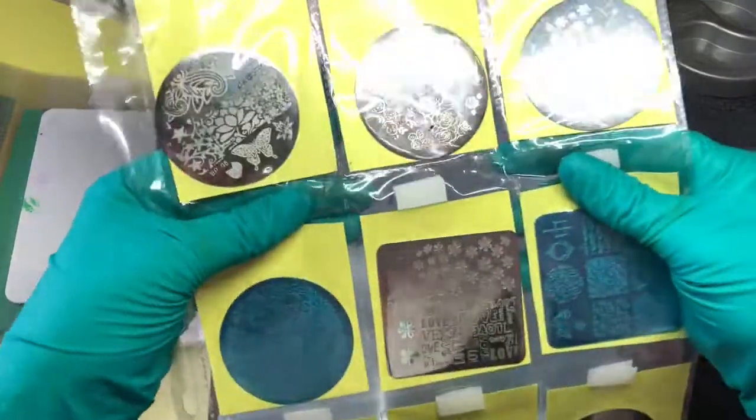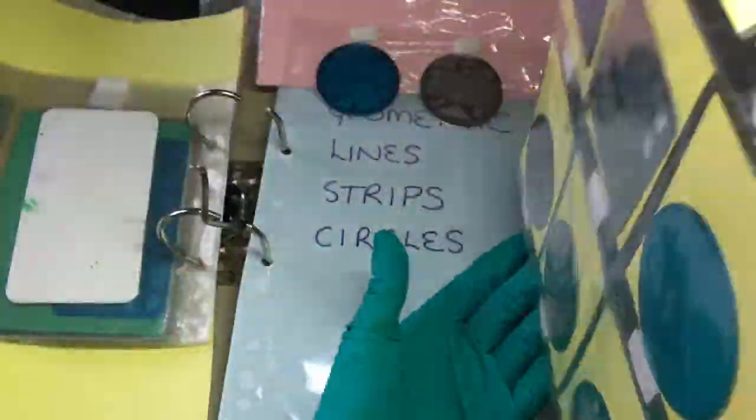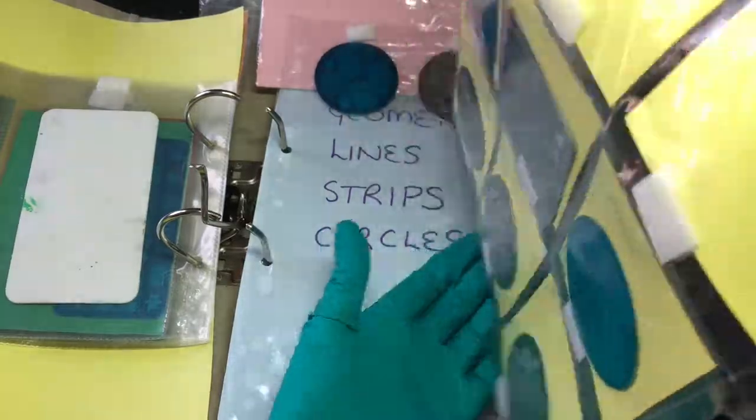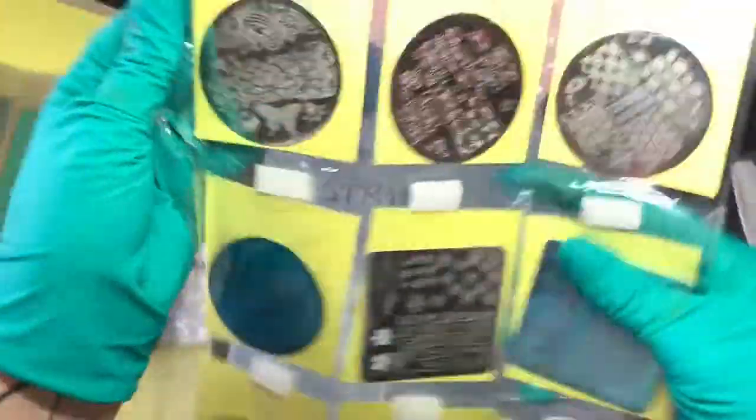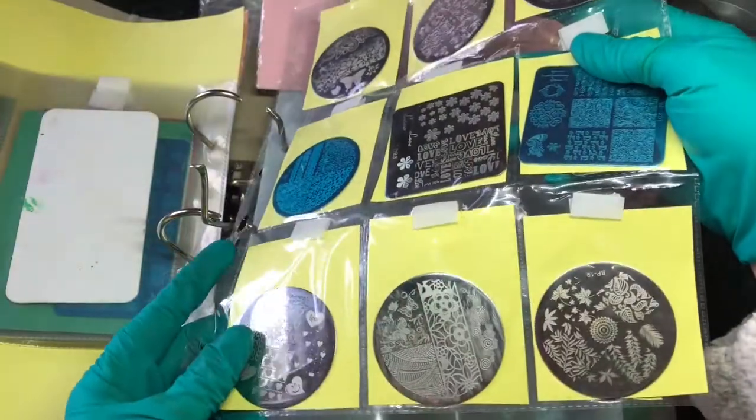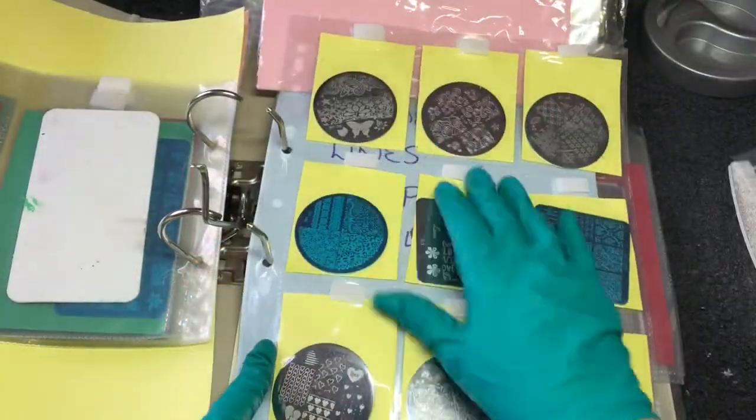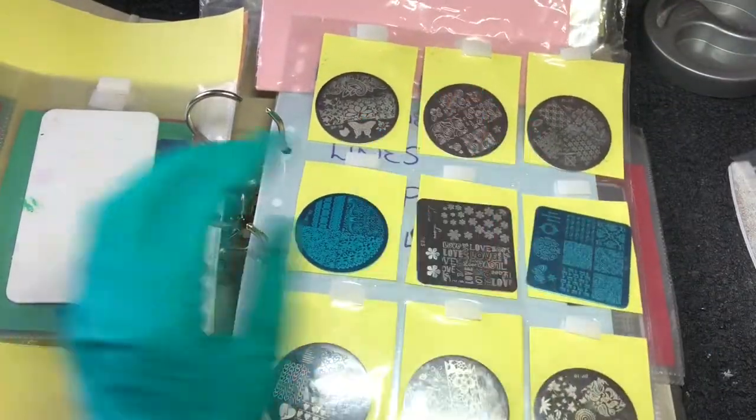When you've put your stamping plates in, you seal that. Then if they get tipped upside down, nothing falls out. If things fall out they get mixed up and it's annoying, so I just put velcro on each section to hold everything in place.